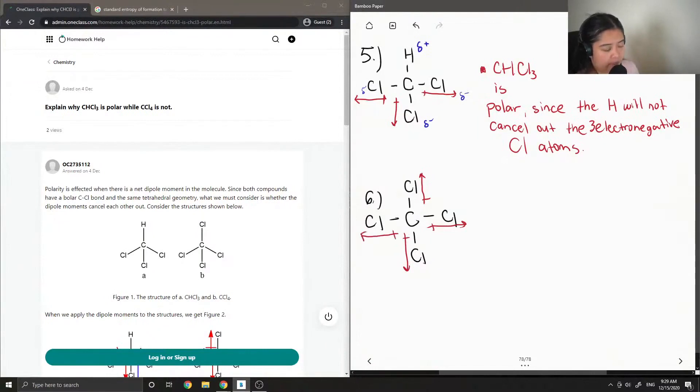But this time the molecule is symmetrical and all of the chlorines will cancel each other out. And CHCl3, which is shown above, we have a hydrogen which isn't as electronegative as all the other chlorines, so it won't be able to cancel out, showing that there's a side that's partially positive and a side that is partially negative.